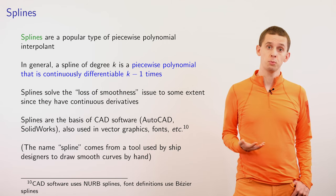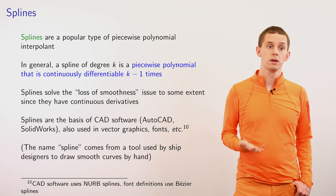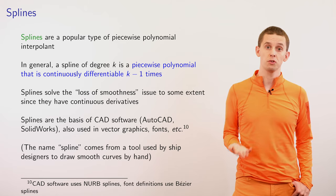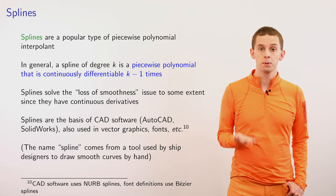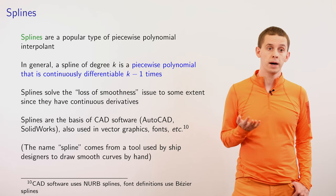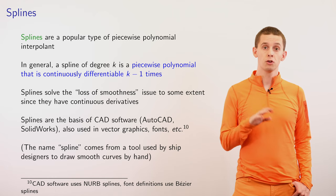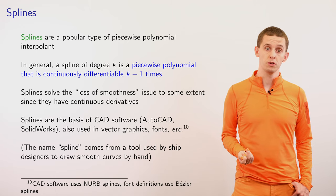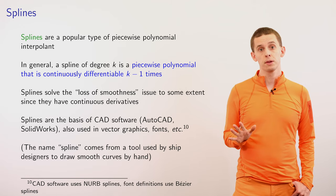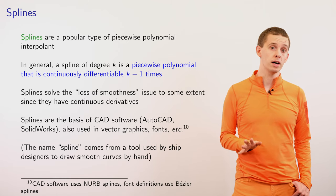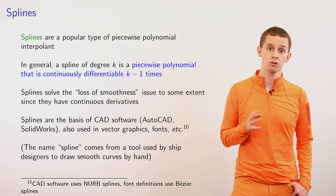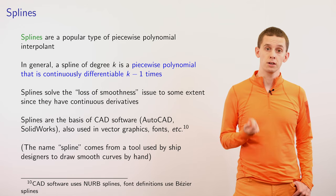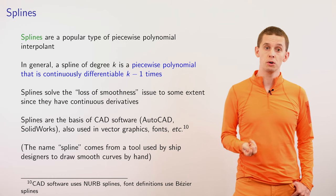Splines are a popular type of piecewise polynomial interpolant. In general, a spline of degree k is a piecewise polynomial that is continuously differentiable k minus 1 times. Splines solve that loss of smoothness issue by ensuring that we have a number of continuous derivatives, and therefore we can often construct functions that retain a certain degree of smoothness. Splines are very popular in computer-aided design using software such as AutoCAD or SolidWorks, and they're also used a lot in vector graphics and font design. The term spline actually comes from a shipbuilding tool that was used to draw smooth curves by hand.